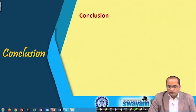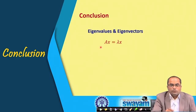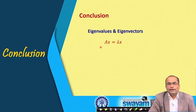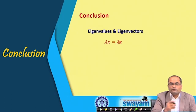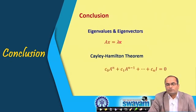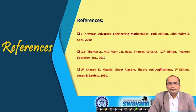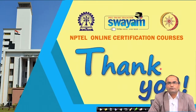In conclusion, we introduced eigenvalues and eigenvectors through the key equation Ax = λx, where lambda is the eigenvalue and x is the corresponding eigenvector. We also studied the Cayley-Hamilton theorem, which states every square matrix satisfies its own characteristic equation. Thank you very much for your attention.